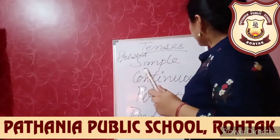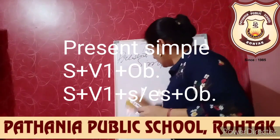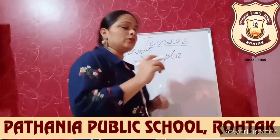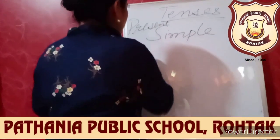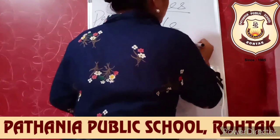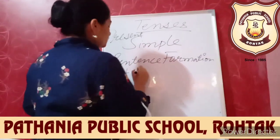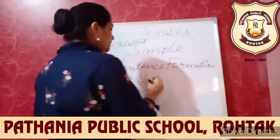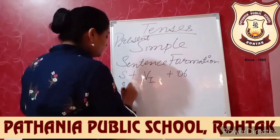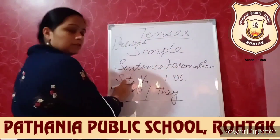So let's start with present simple tense. I will tell you the sentence formation — how we can form the sentence. We take subject + verb first form + object. In the case when the subject is I, we, or they, we follow this sentence formation.